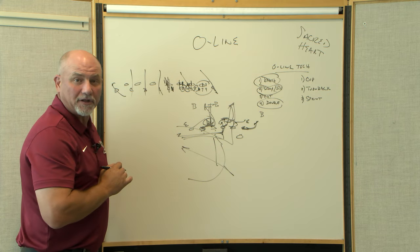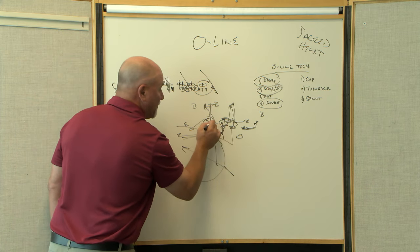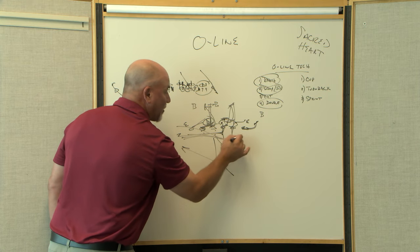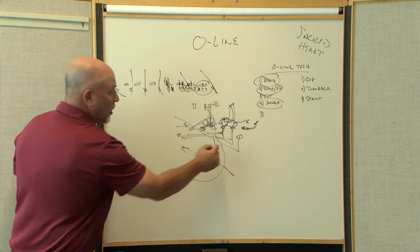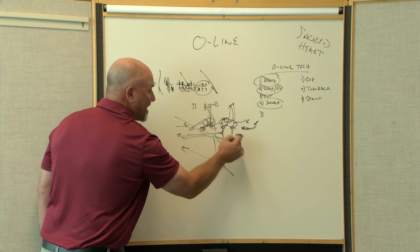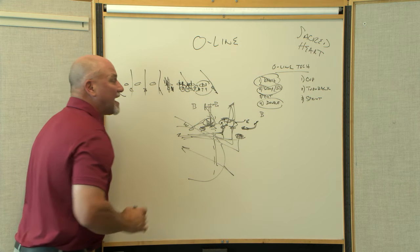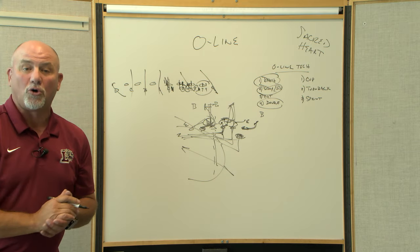Set the tight end off the line of scrimmage and maybe block back with everybody and pull the tackle and the tight end getting Mason Gilbert. So those are pull blocks. Anytime you start on one side of the center and you cross the line of scrimmage would be a pull.